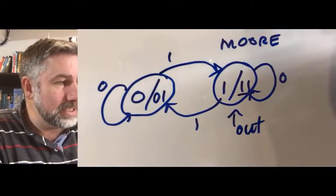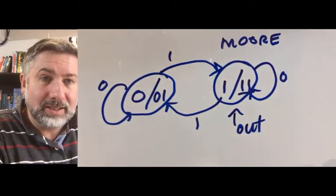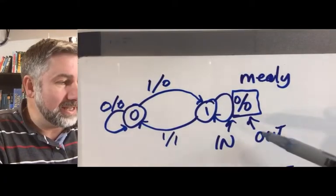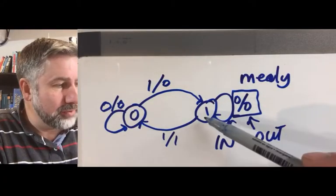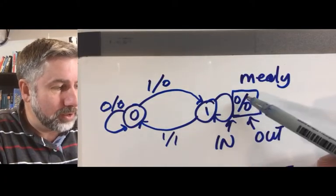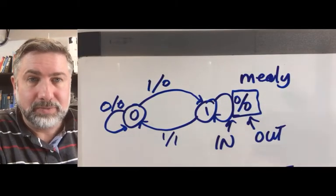So the difference between a Mealy and a Moore machine. In a Moore machine you indicate the output based on the state. In a Mealy machine you indicate the output based on the state and the transition. So if I'm in state 1 and I go to state 1, a 0 will cause that and the corresponding output would be a 0.